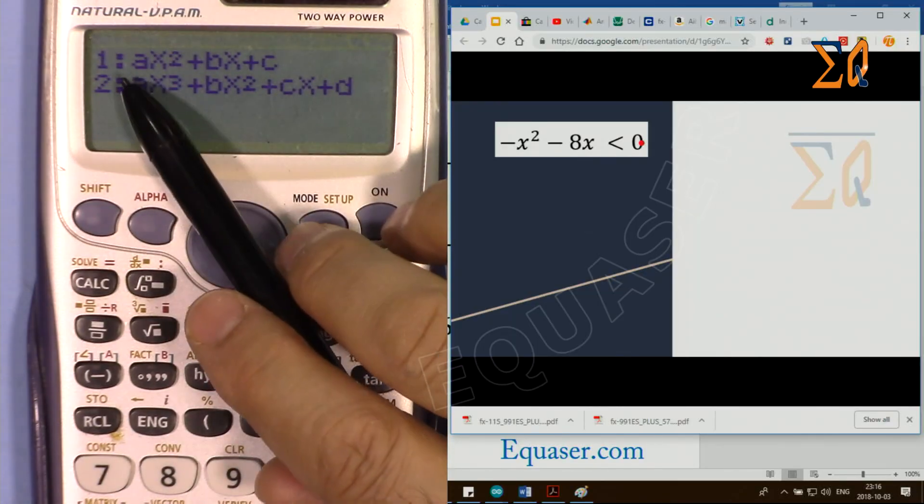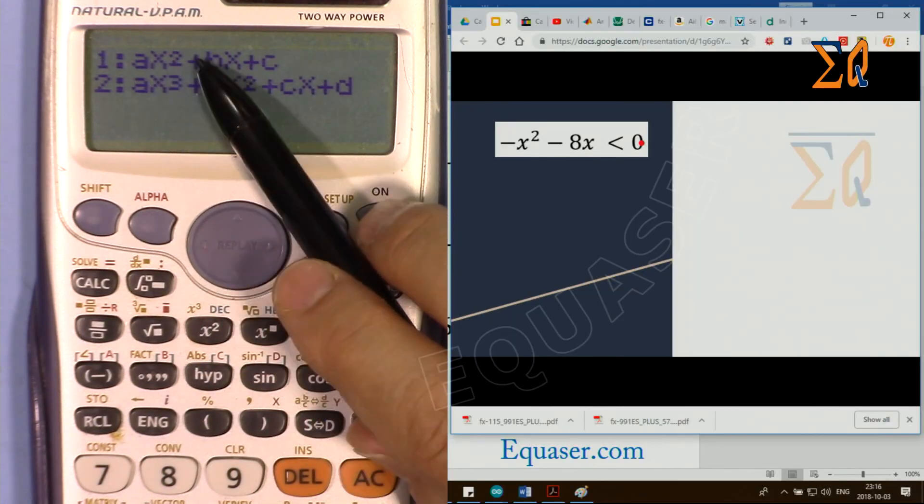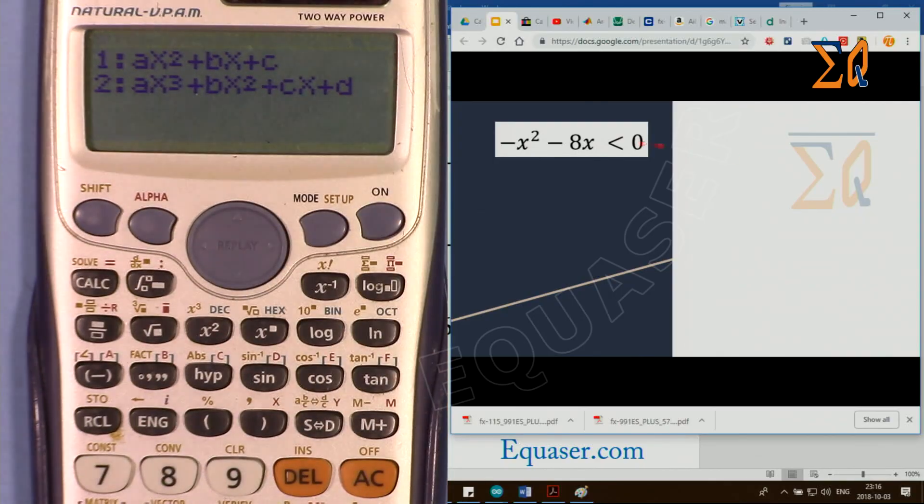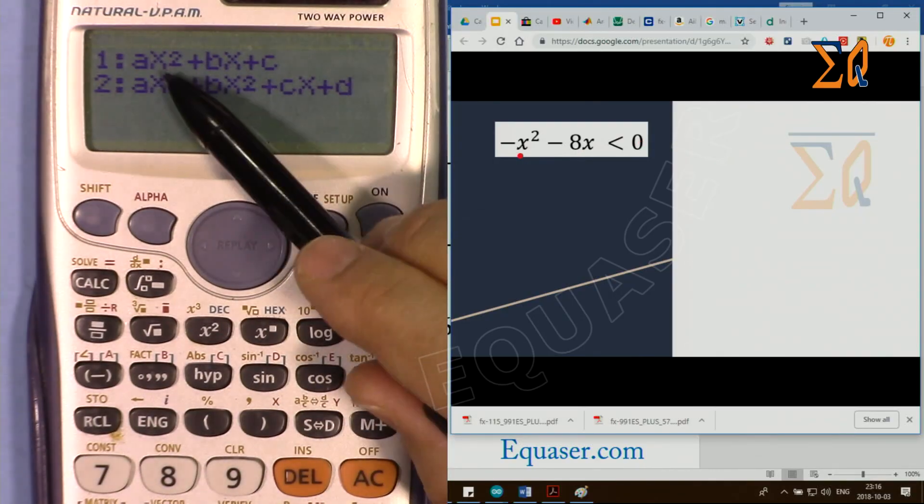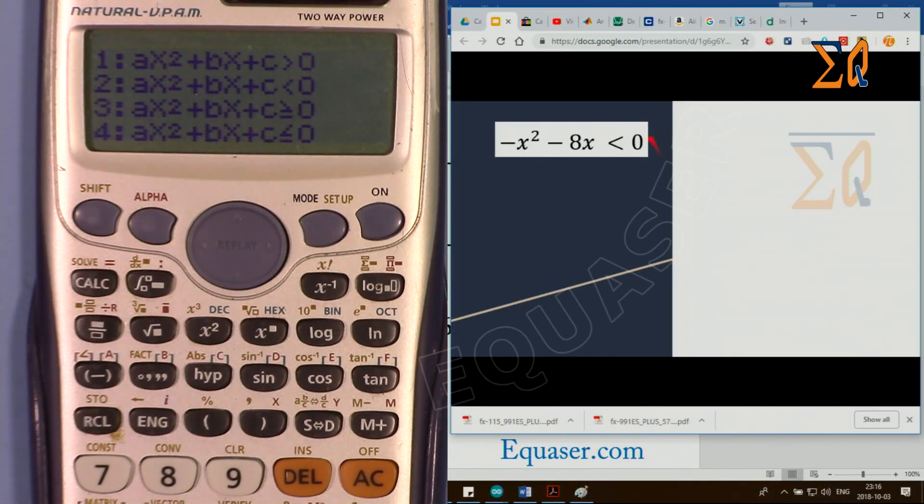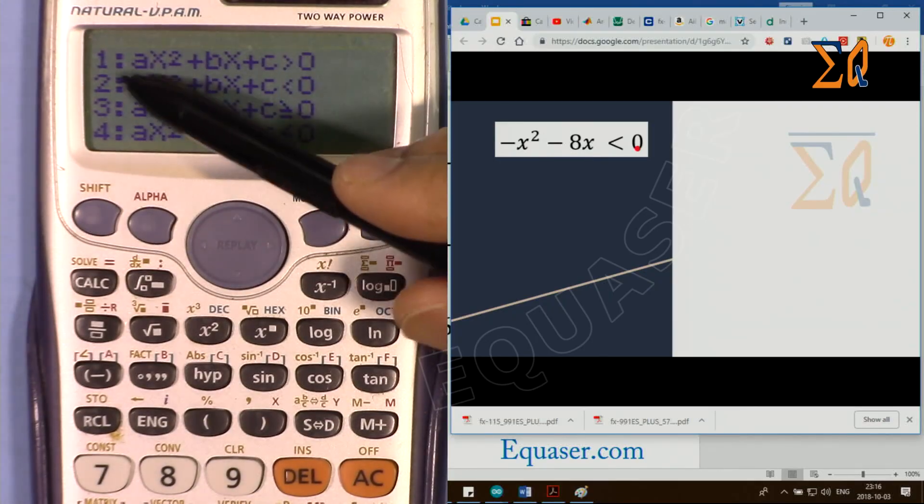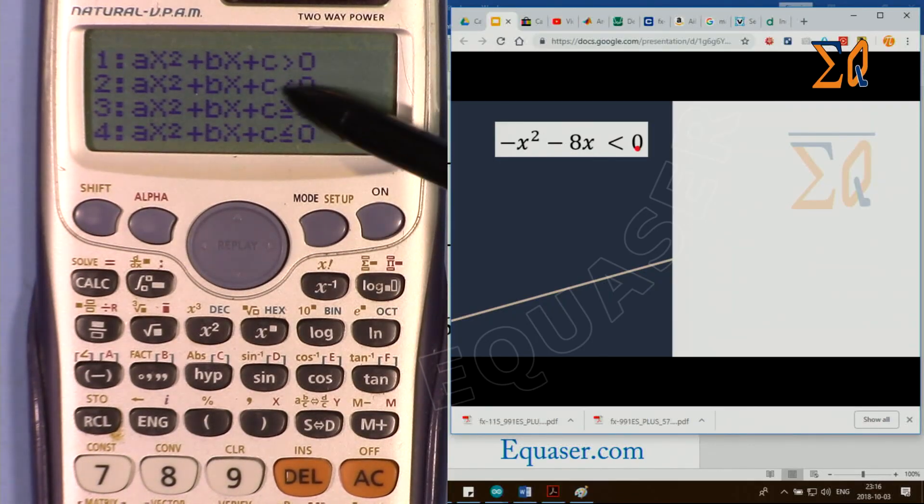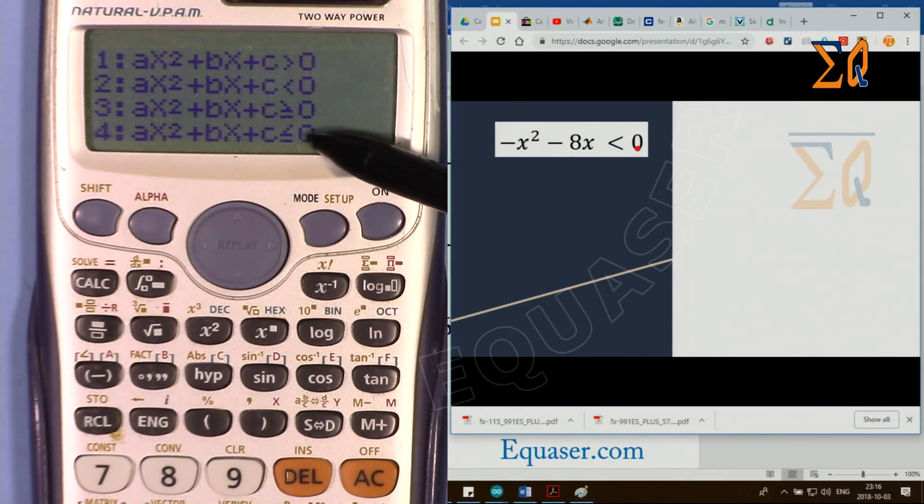This screen will show first degree, second degree, and third degree. Ours is second-degree x squared, so press 1 for second degree. Our equation is smaller than 0, so we can see the options: bigger than 0, smaller than 0, equal to, smaller or equal, and greater or equal to 0. Ours is number 2, so press 2.